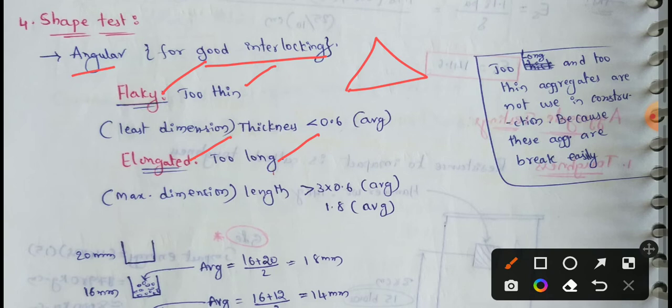Flakiness index and elongation index. First, the flakiness index: it is the percentage by weight of aggregate particles whose least dimension or thickness is less than 0.6 times their mean dimension.